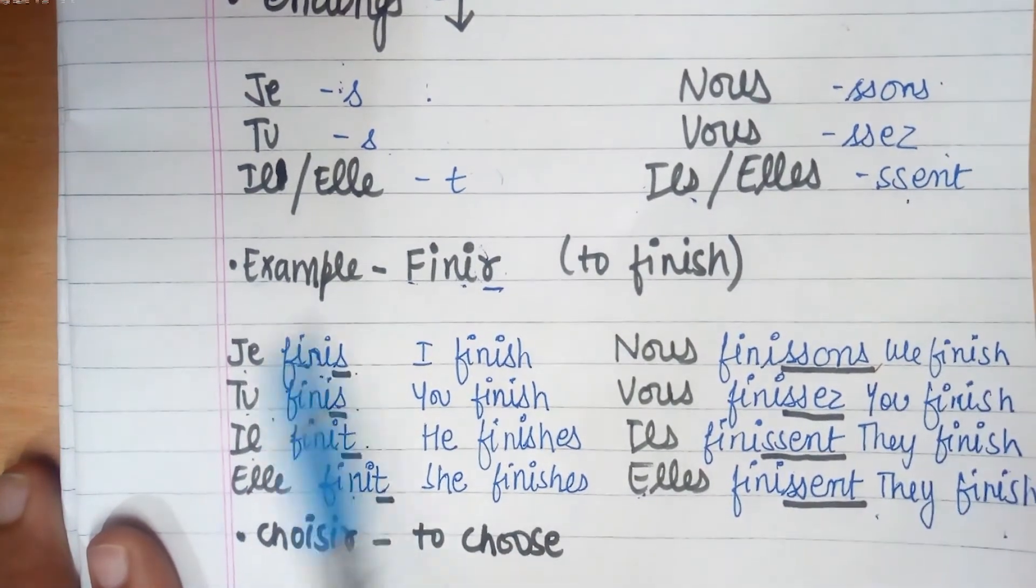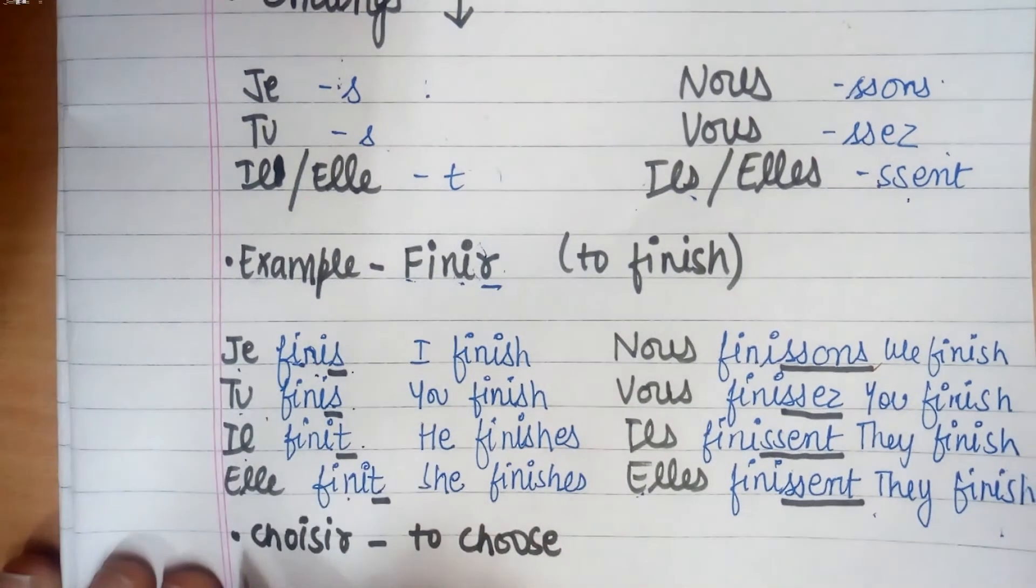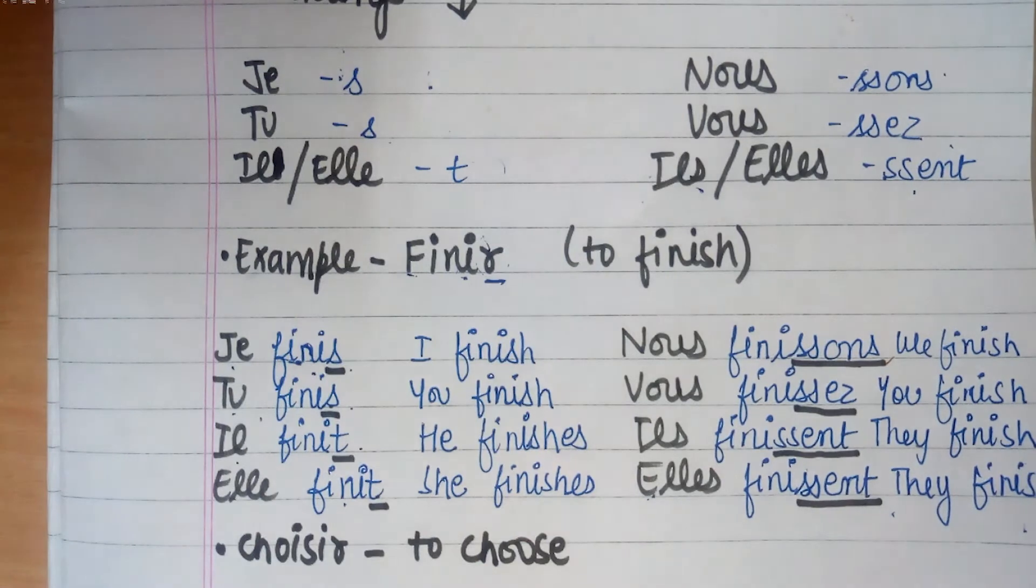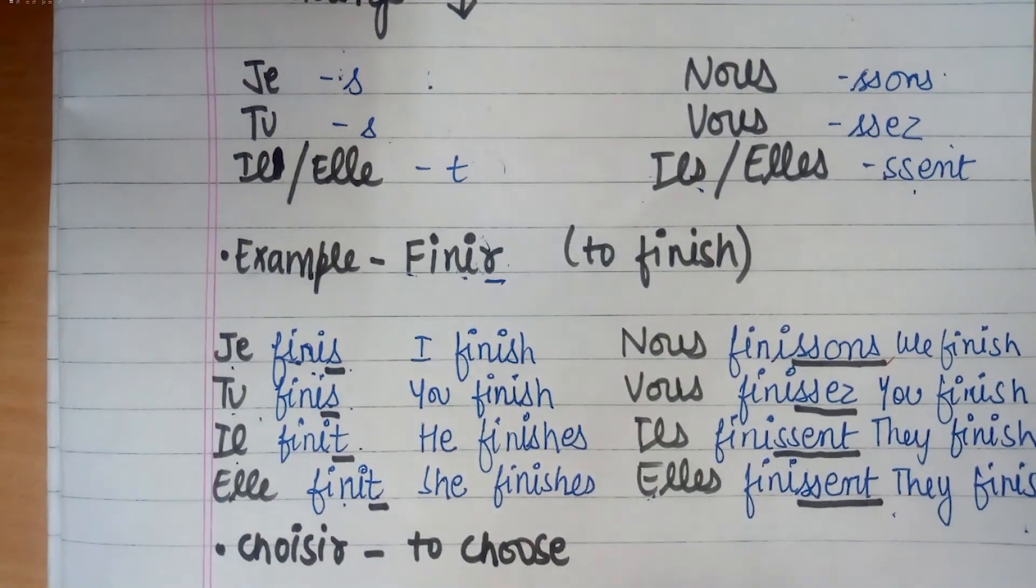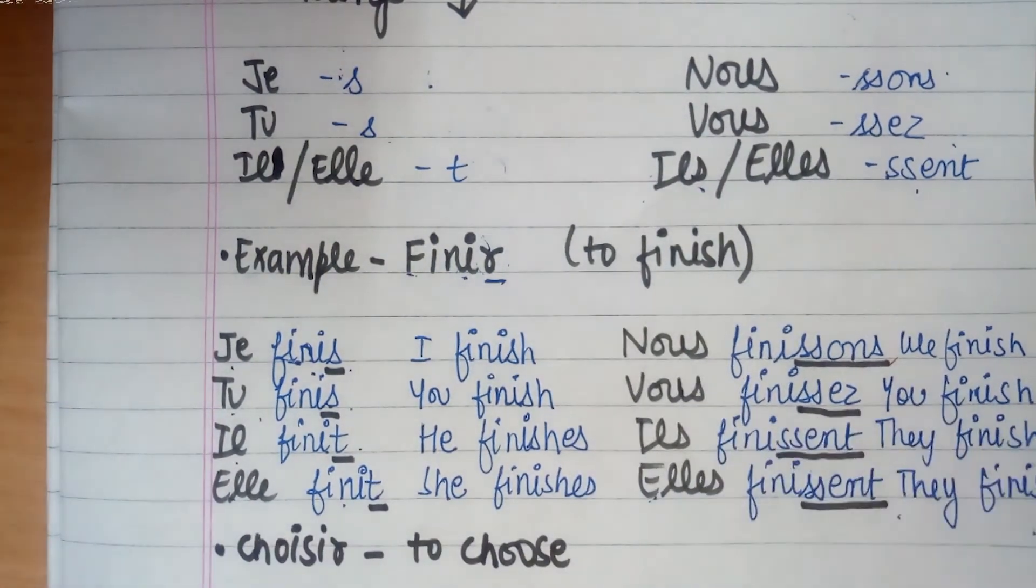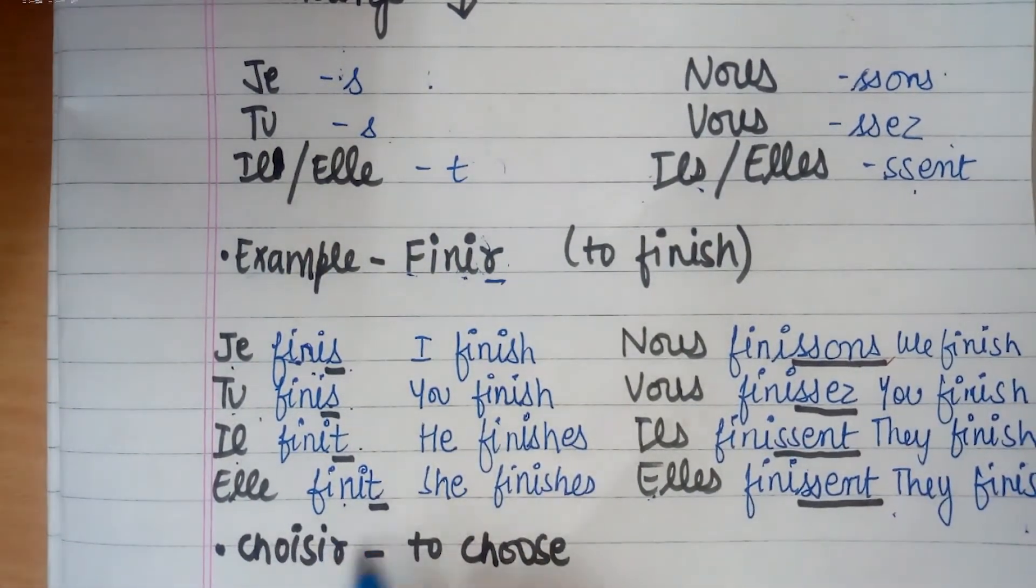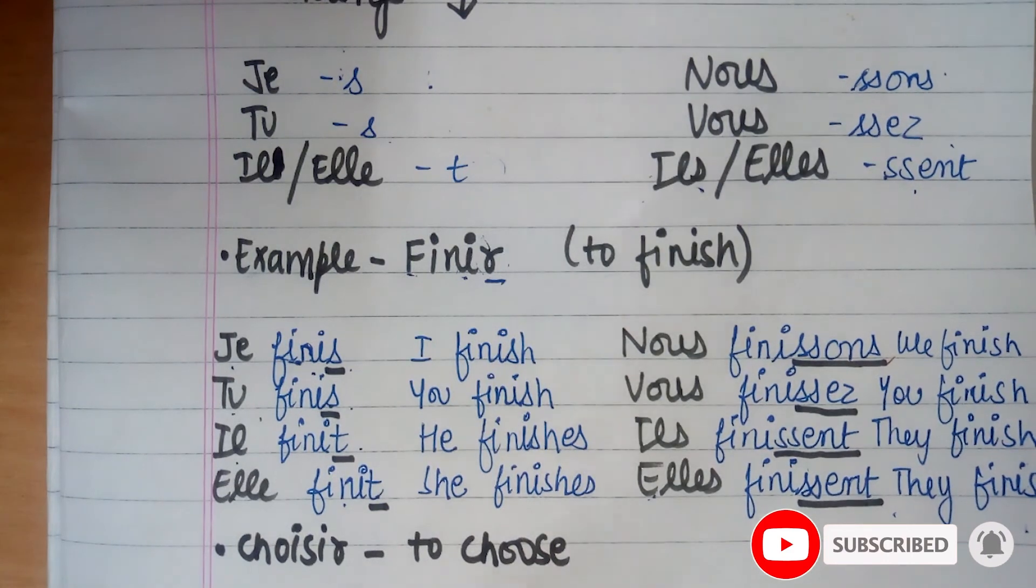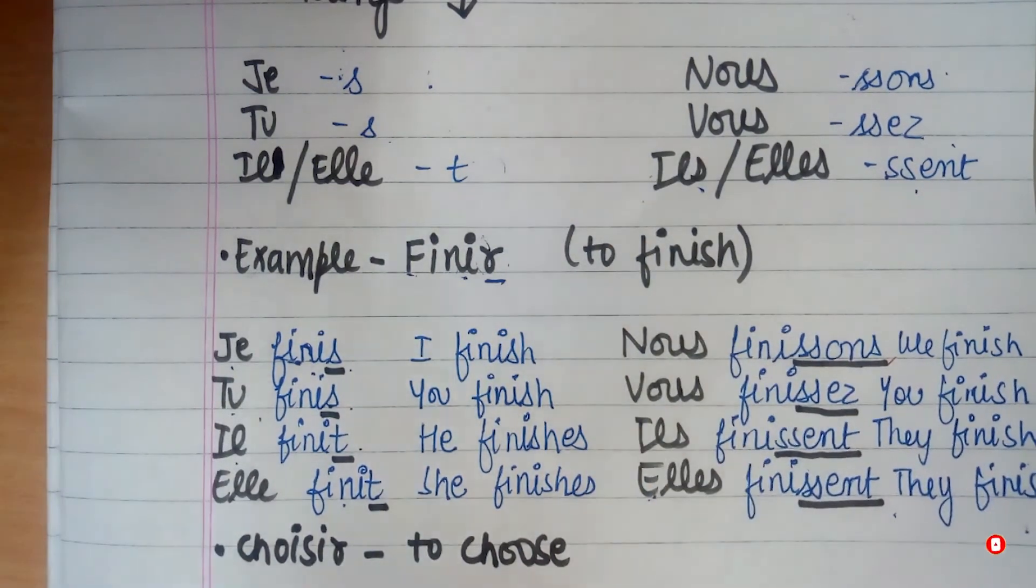And this is the verb choisir, to choose. You can write in the comment box or you can practice on your own. Just to practice I have given one verb. This will be conjugated the same way - there are many verbs, just practice this one verb. We'll meet in our next video. Thank you, please like, share, comment and subscribe to our channel.